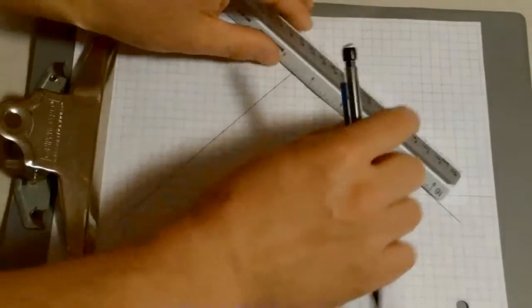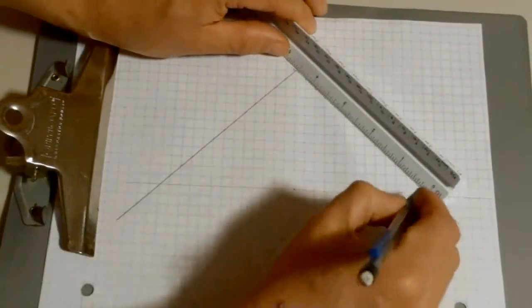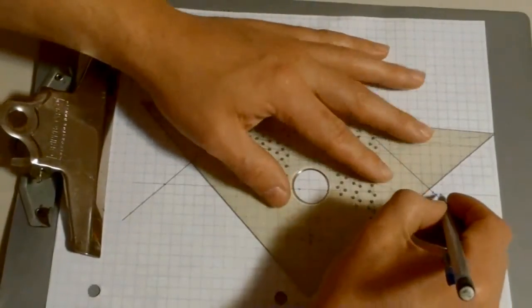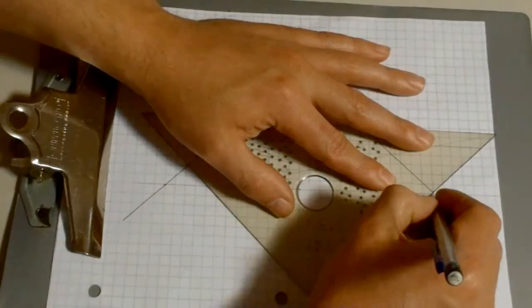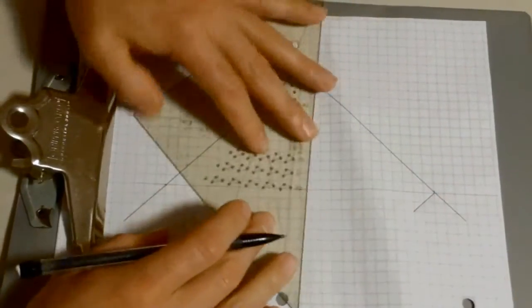To make the wings you measure down your 45 degree lines 4 and a half inches. Come to those marks and draw a line down 45 degrees. And there you can see the wings starting to take shape.